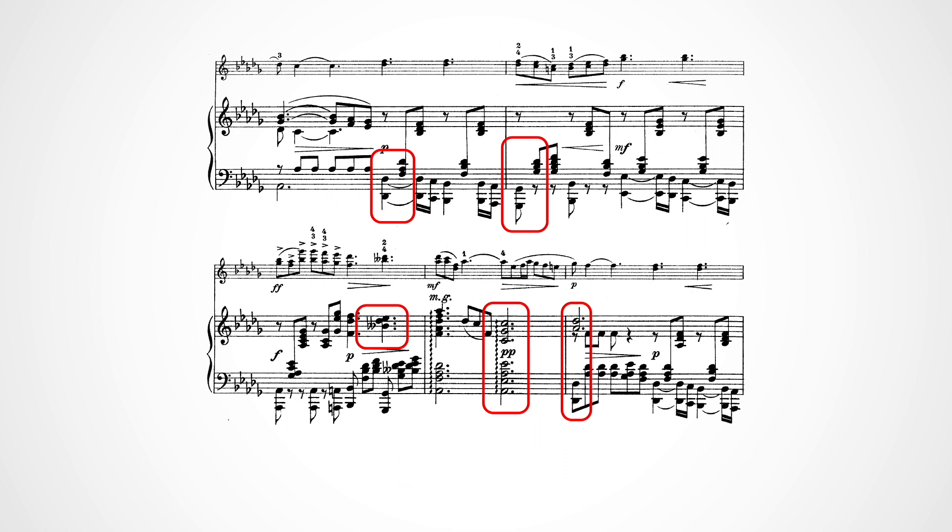As a bonus, that M-G over the top part right before this rolled chord is another way of saying M-S. Can you remember what M-S means? Yes, it means mano sinistra, or play with the left hand. The arranger wants you to play that top note with the left hand crossing over the right.